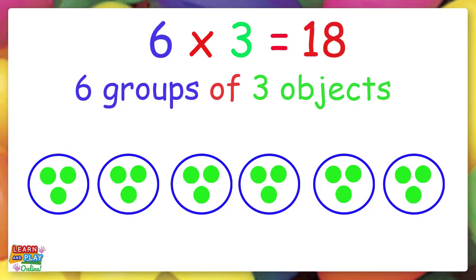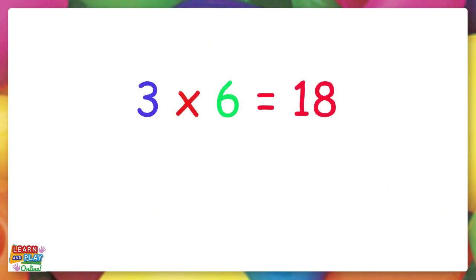18. Excellent! So now we know that 3 times 6 is 18 and 6 times 3 is also 18.